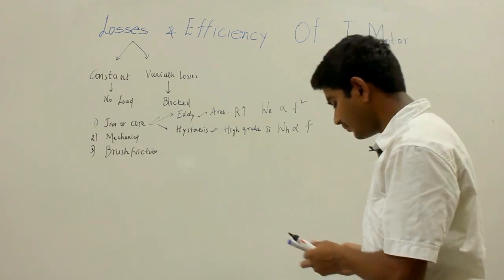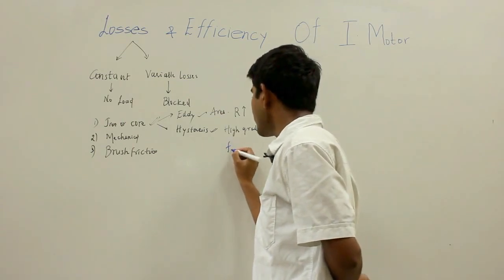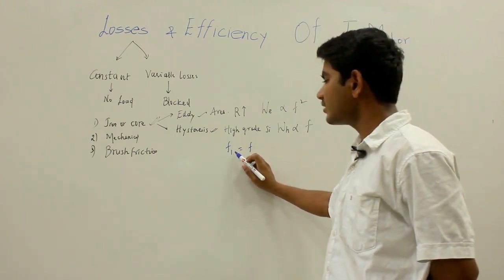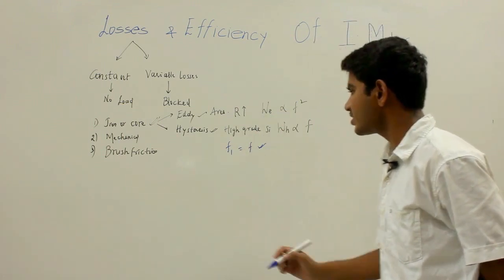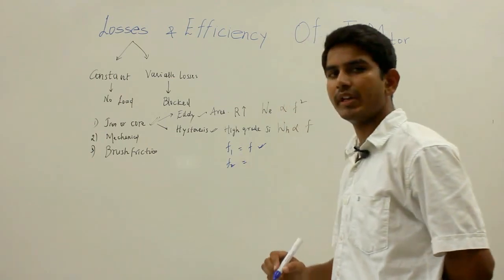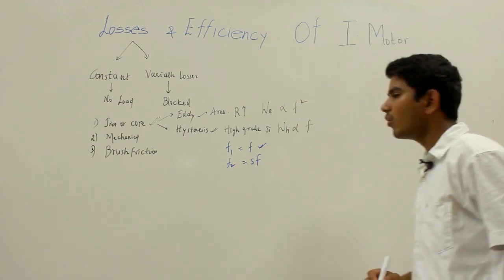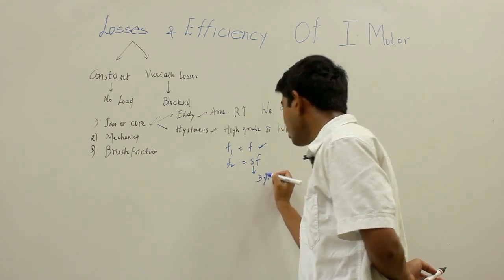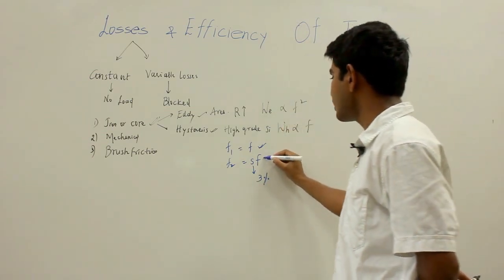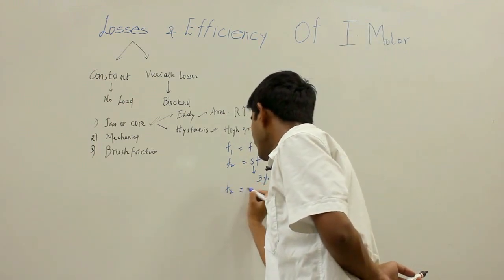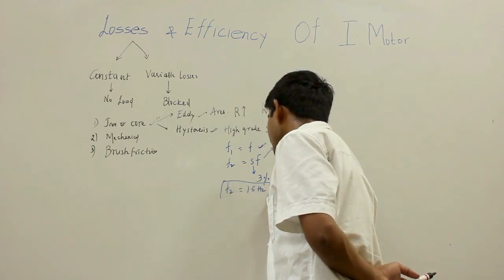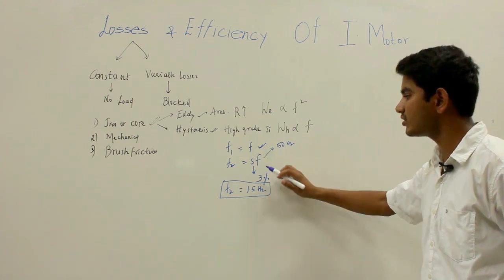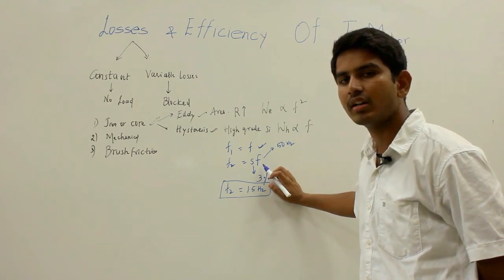The stator frequency f1 is equal to the supply frequency f. The rotor frequency f2 equals slip times the supply frequency f. Under normal working conditions, the induction motor slip is of the order of 3%. So if the supply frequency is 50 Hz, the rotor frequency will be 1.5 Hz. Since the frequency is very low, the rotor core losses can be neglected.